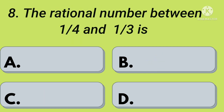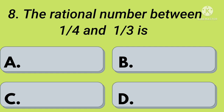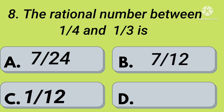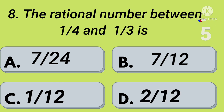Eighth question: the rational number between 1 by 4 and 1 by 3 is — option A: 7 by 24, option B: 7 by 12, option C: 1 by 12, option D: 2 by 12. Your time starts now. Right, option A: 7 by 24.